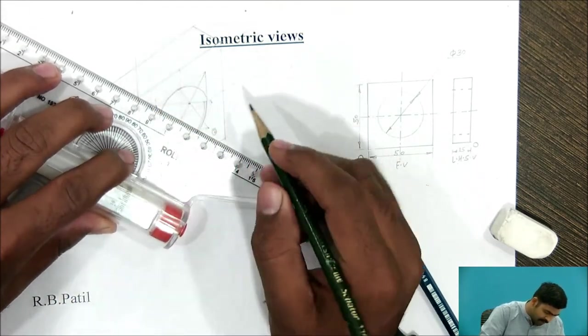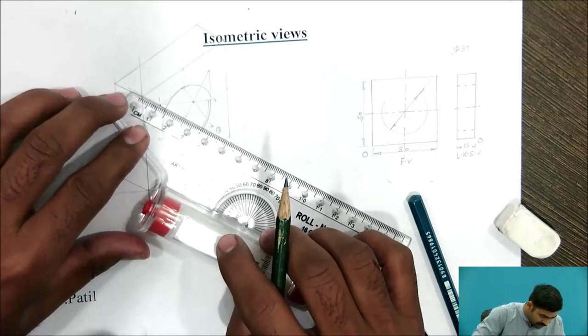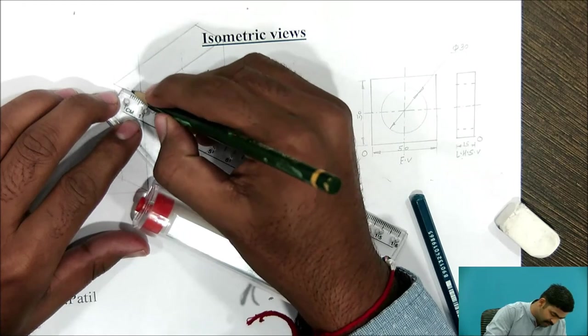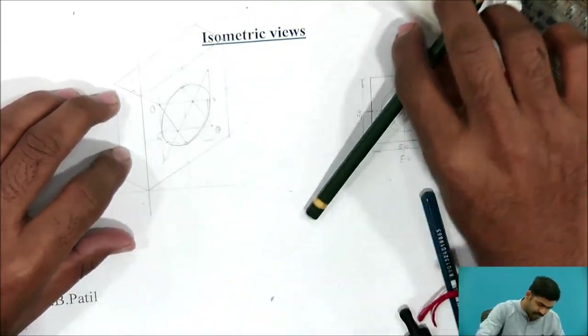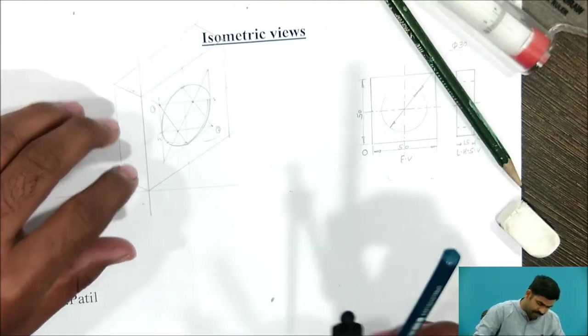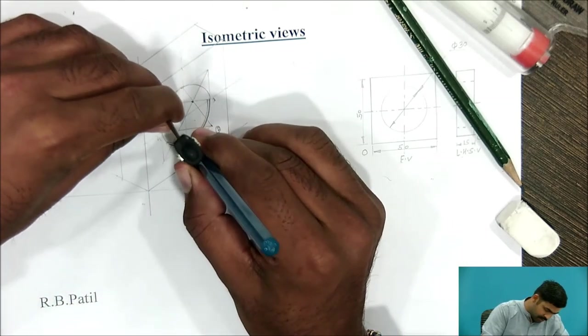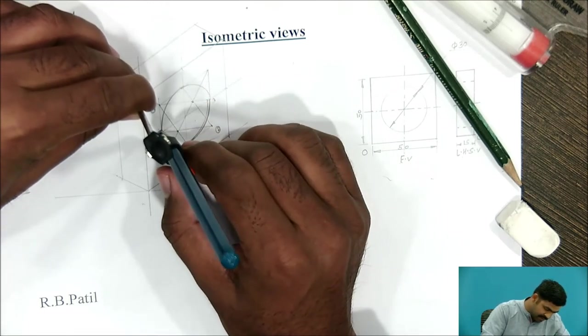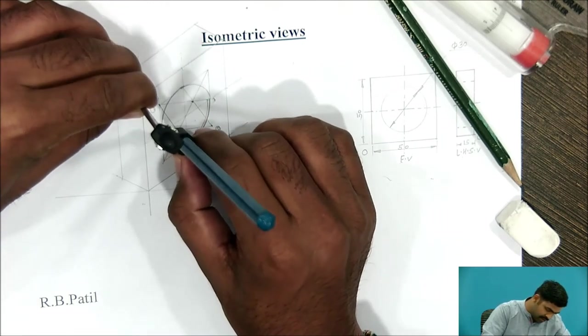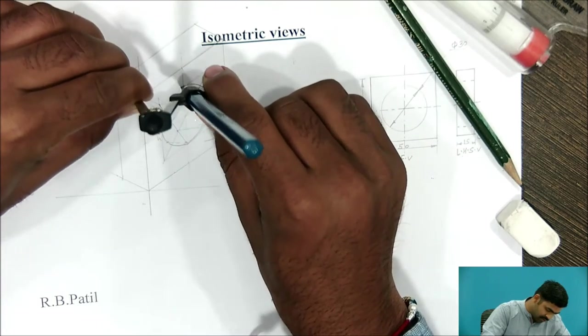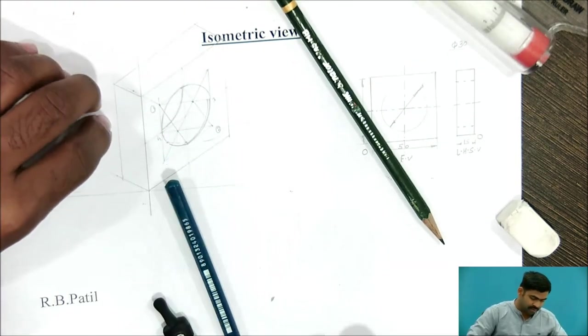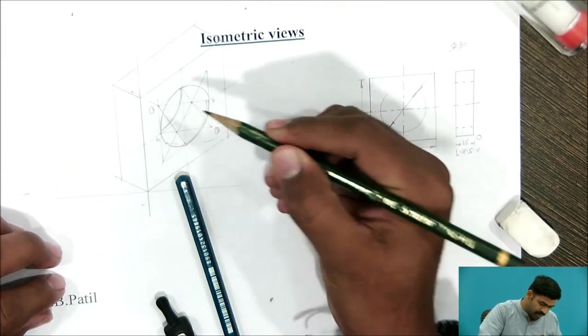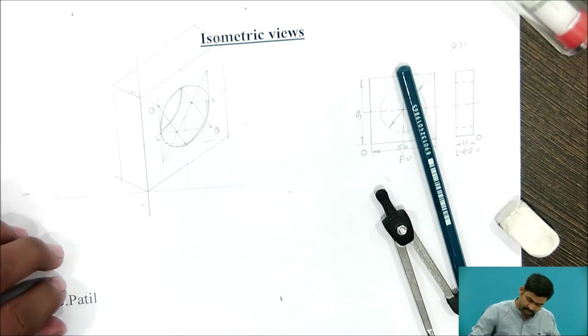Shift this centre backward by 15 mm. From this, this dimension is 15 mm. Again, take same radius, consider this as a radius or centre point, and draw, so that you will consider the depth for this content.